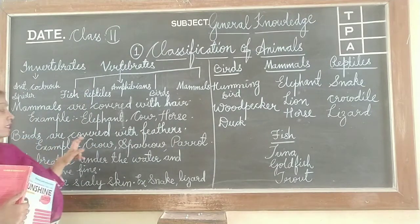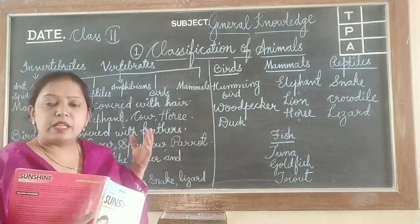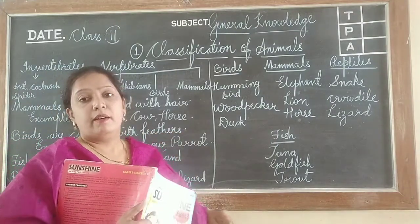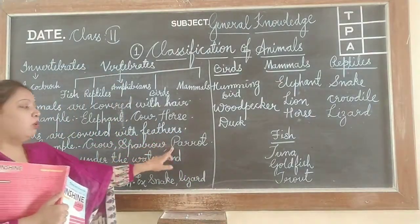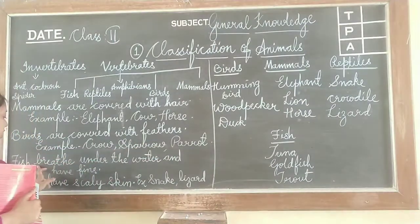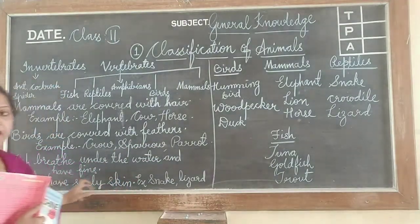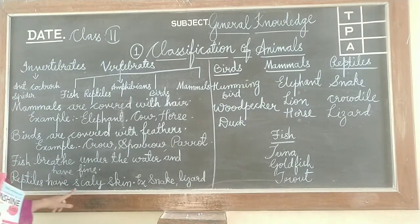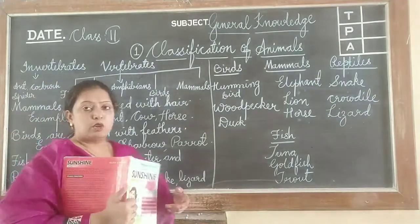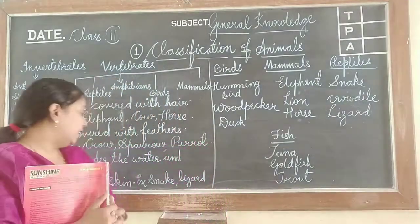Birds are covered with feathers. The body of birds is covered with feathers — examples: crow, sparrow, parrot. Fish breathe under water and have fins. Reptiles have scaly skin, like snake and lizard.